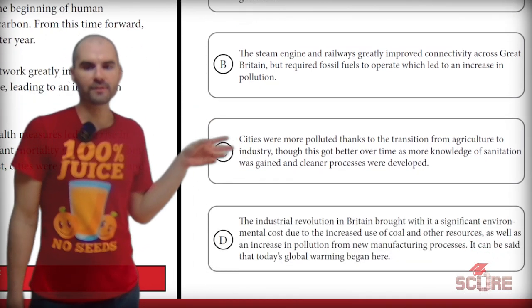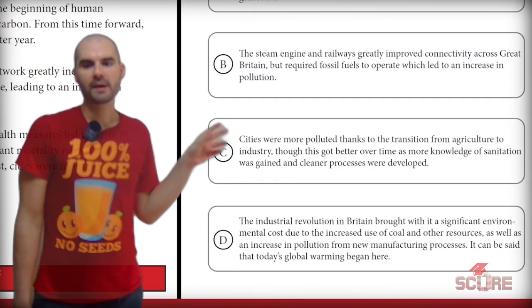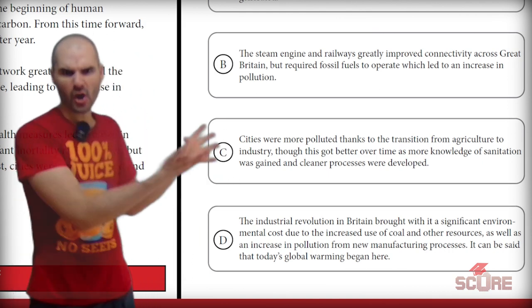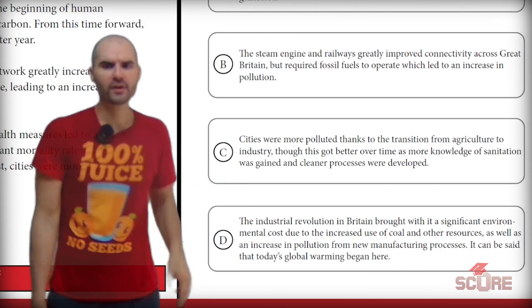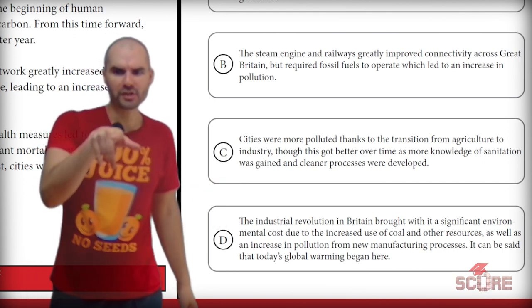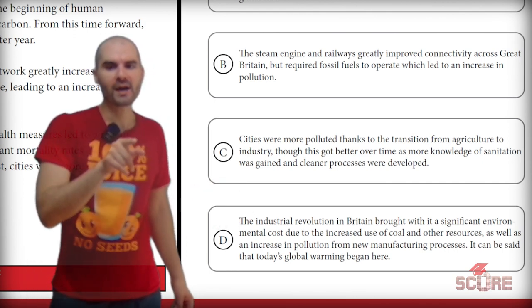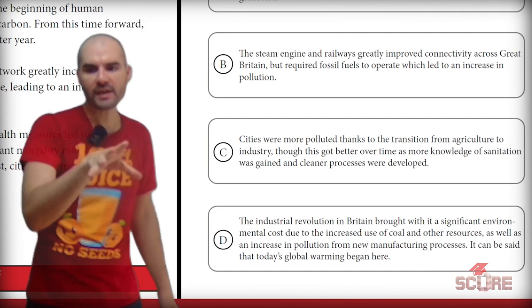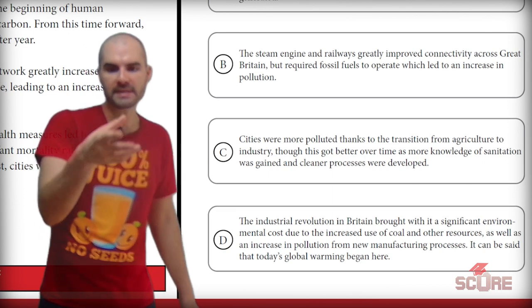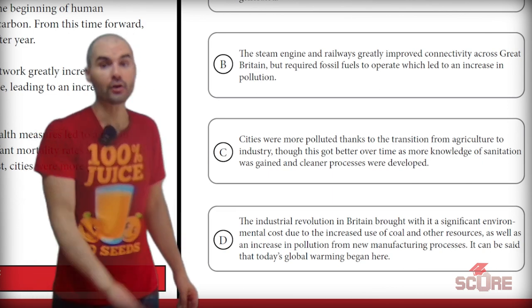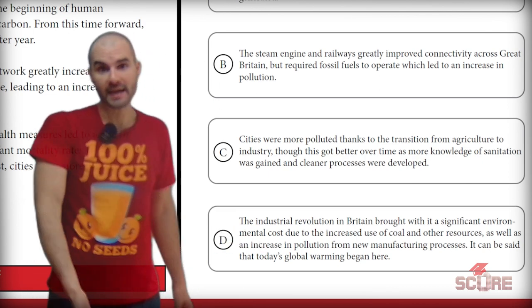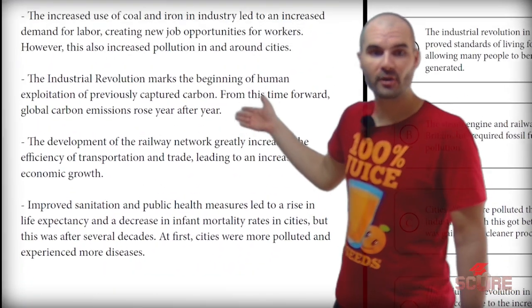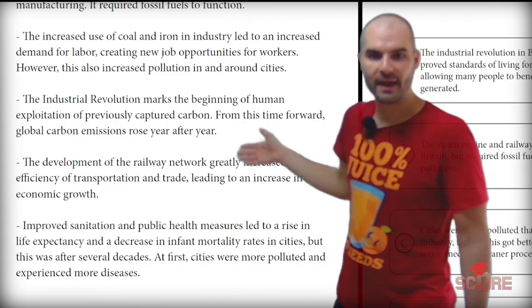C says cities were more polluted thanks to the transition from agriculture to industry, but this got better over time — I feel like this is too narrow, just focusing on the cities. The last one says the Industrial Revolution in Britain brought with it significant environmental cost. We've linked the two key concepts from the question. Due to the increased use of coal and other resources, it can be said that today's global warming began here. This is definitely the right answer — I can confirm it with the notes, which talk about how global carbon emissions rose year after year from this point forward.